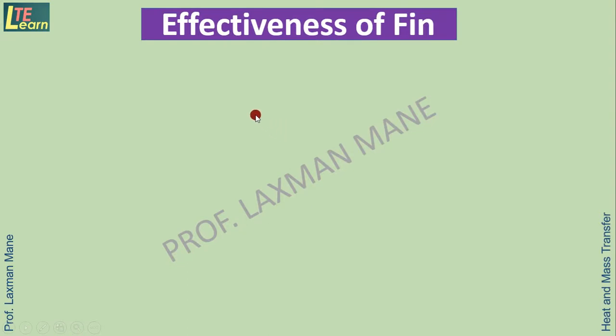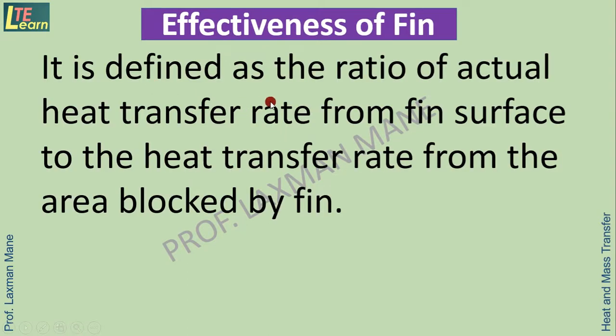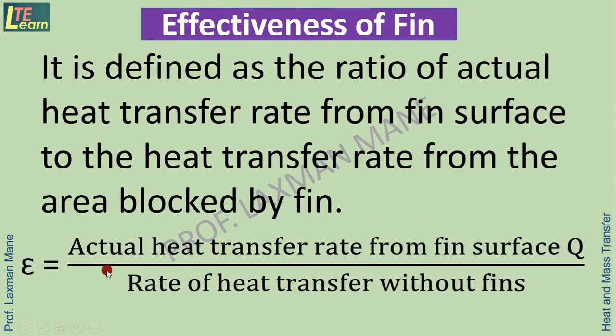Now we will see effectiveness of fin. It is defined as the ratio of actual heat transfer rate from fin surface to the heat transfer rate from the area blocked by fin, as if there is no fin. It is given mathematically as Q divided by rate of heat transfer without fins.